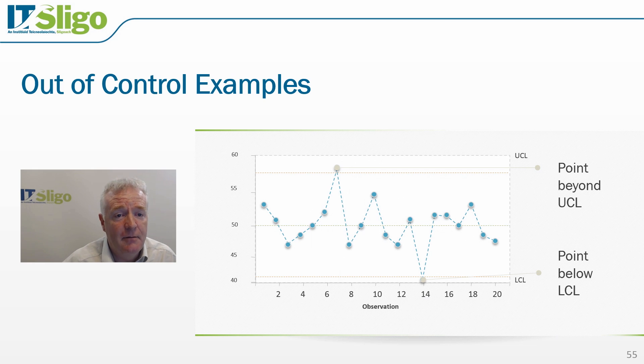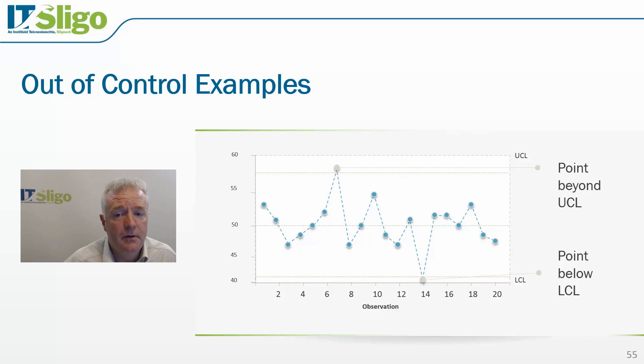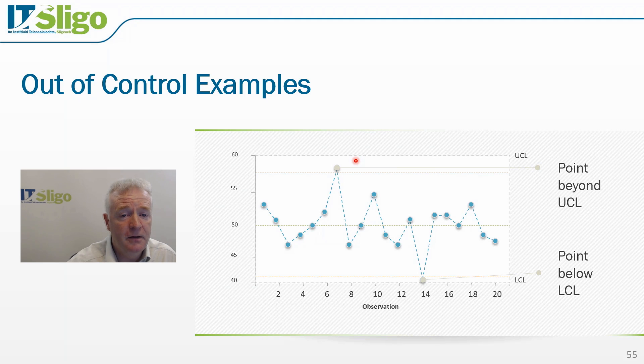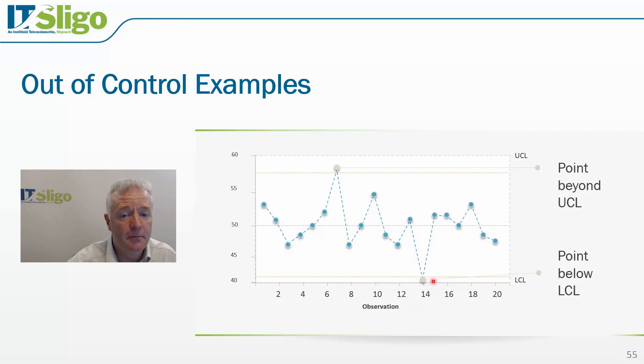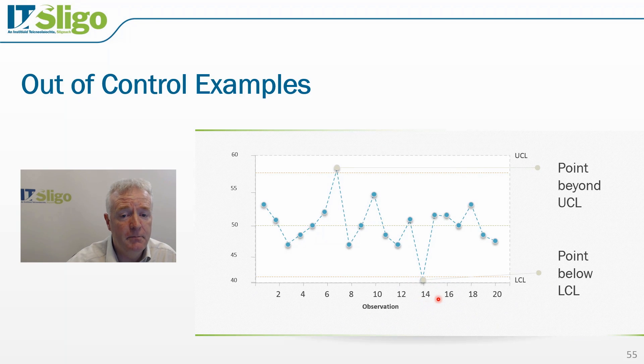Let's take a look at some examples of out of control conditions. Here we see a point falling above the upper control limit. The probability of this occurring is very low. Only 0.135% of all values would fall beyond the upper control limit. Similarly, the probability of a point falling below the lower control limit is very low. So when it occurs, it is an indication that special cause variation may be present, and we need to investigate what is occurring in our process.